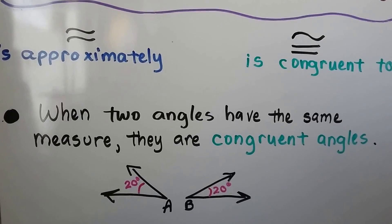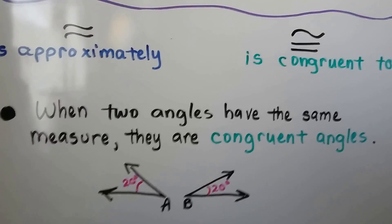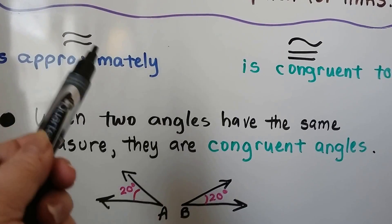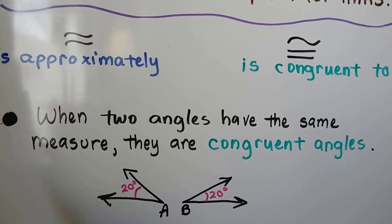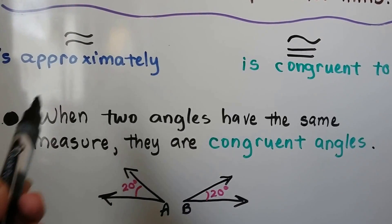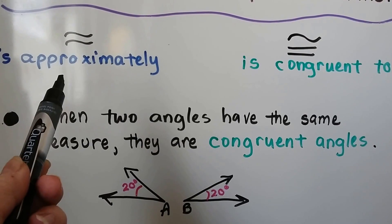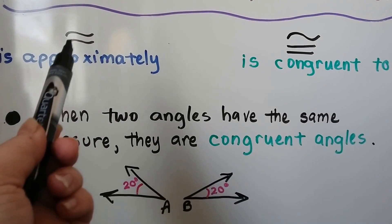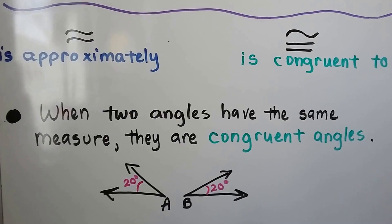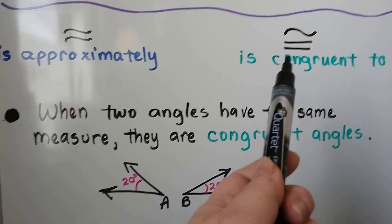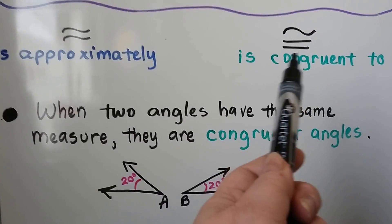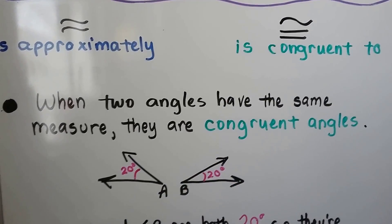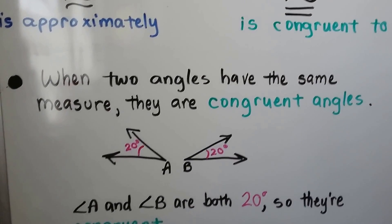We learned that this symbol means approximately. Like when we were dealing with pi — because it's such a long number with so many digits — we use 3.14, so it's approximately the answer. When we have an equal sign with a wavy bar on top, that means 'is congruent to.'